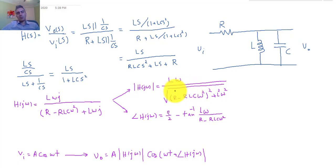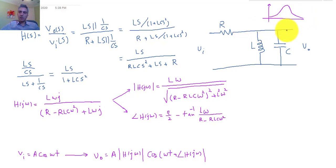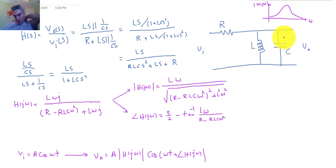So H(jω) starts from zero at low frequencies, ends up at zero at high frequencies, and in the middle it has to go up and then come back down again. This general characteristic tells us it is a band-pass filter.